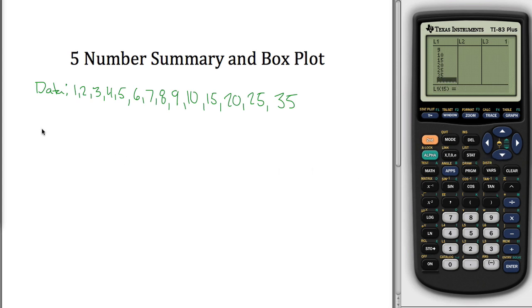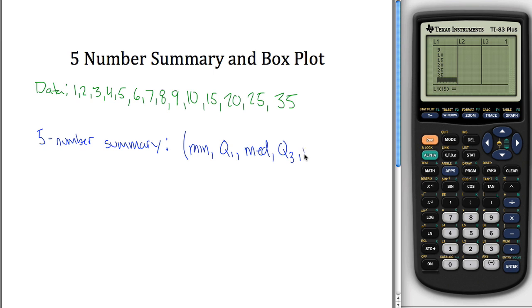So maybe the first thing I'll do is calculate my five number summary. Five number summary is five different numbers that describe a lot of the data. What those five numbers are: the minimum value, the first quartile, the median, the third quartile, and the maximum.